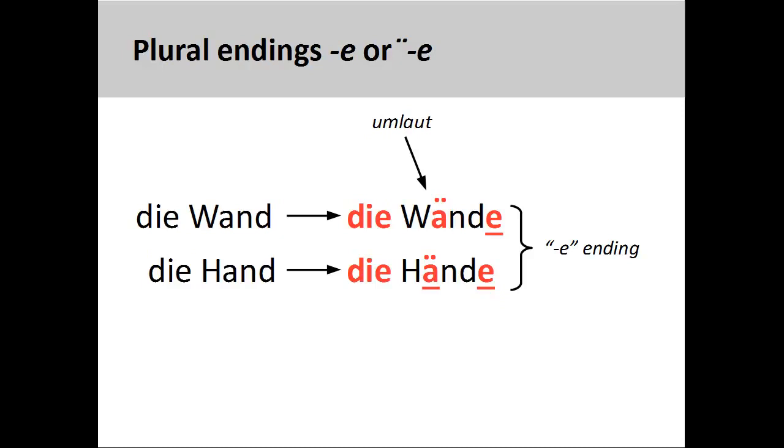A few feminine nouns having only one syllable, such as Hand, hand, and Wand, wall, also add an -e plural ending and an umlaut, Hände und Wände.